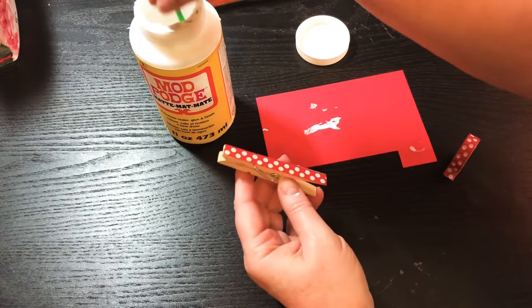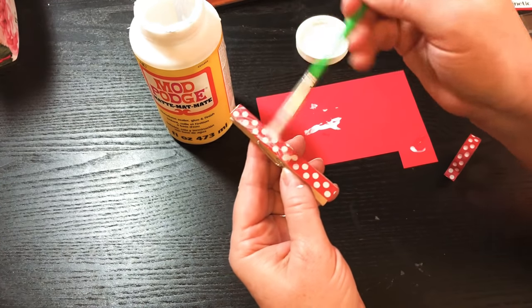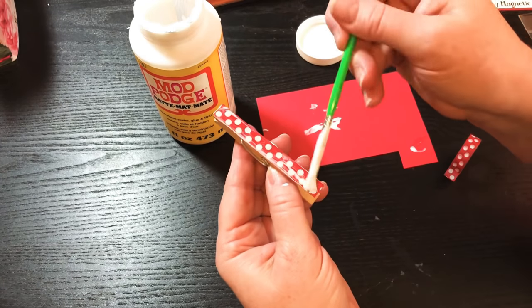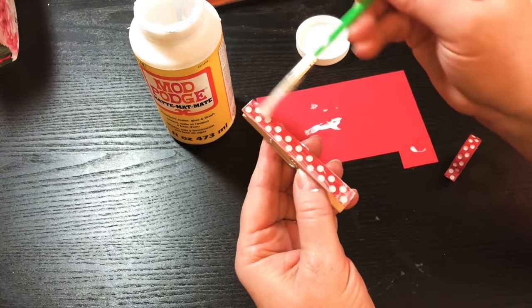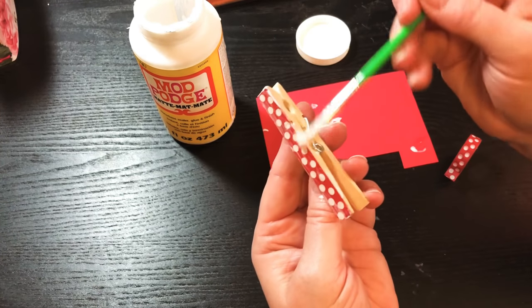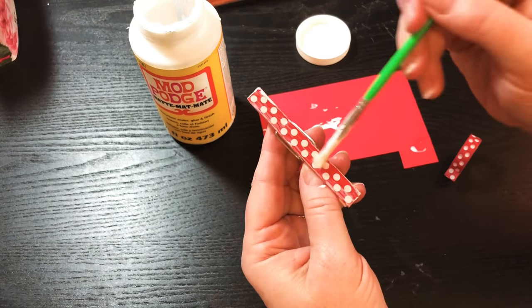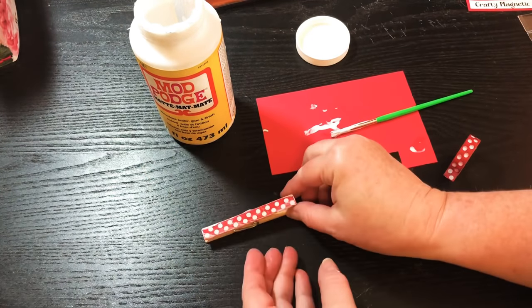Now, what you're going to do is you're going to Mod Podge the top. It goes on a little white, but when it dries, it is clear. So get it on the edges really good. And that's what it will look like. Okay, so let me close up the glue.